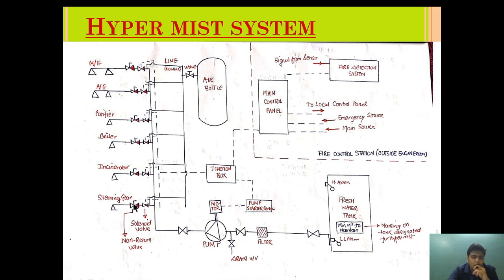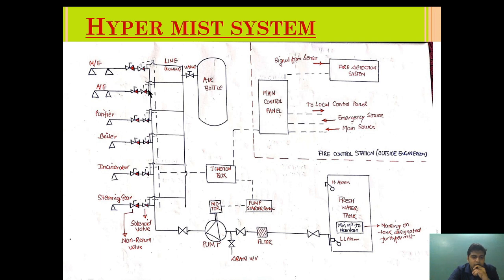The solenoid valve actuation is controlled by the main control panel, which receives a signal only when both the smoke and flame detectors activate simultaneously. The water waits at the solenoid valve, and through a normally open valve, the Hypermist is injected. To ensure the line is clear, an air bottle connection and a line-blowing valve are provided. We manually activate the solenoid, wrap plastic around the nozzle, open the air, and observe the plastic inflate — confirming the line is clear and unobstructed.